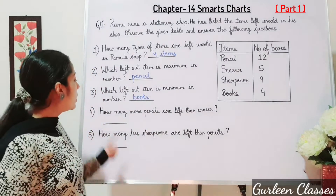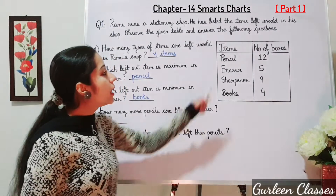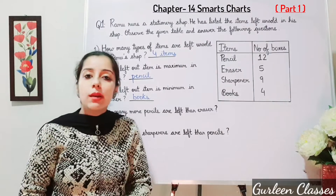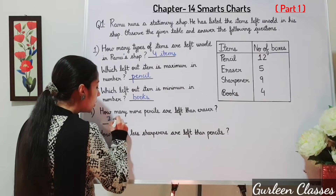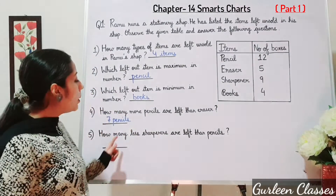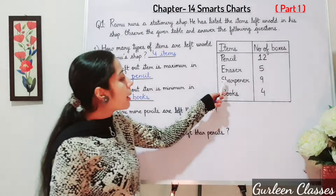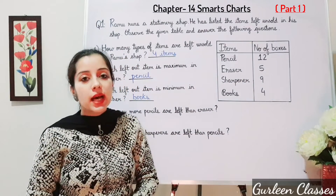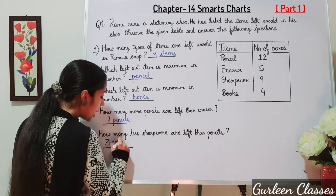How many more pencils are left than erasers? Pencils are 12 and erasers are 5. 12 minus 5 equals 7 pencils. How many less sharpeners are left than pencils? Sharpeners are 9, pencils are 12. 12 minus 9 equals 3 sharpeners.